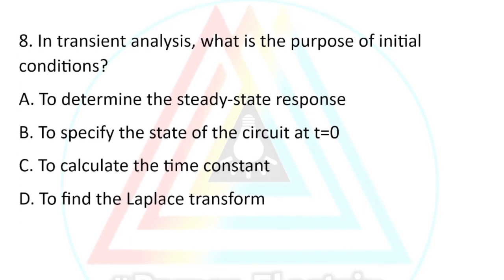Question number eight: In transient analysis, what is the purpose of initial conditions? Option A, to determine the strict response. Option B, to specify the state of the circuit at t equal to zero. Option C, to calculate the time constant. Option D, to find the Laplace transform. The correct answer is option B — to specify the state of the circuit at t equal to zero.